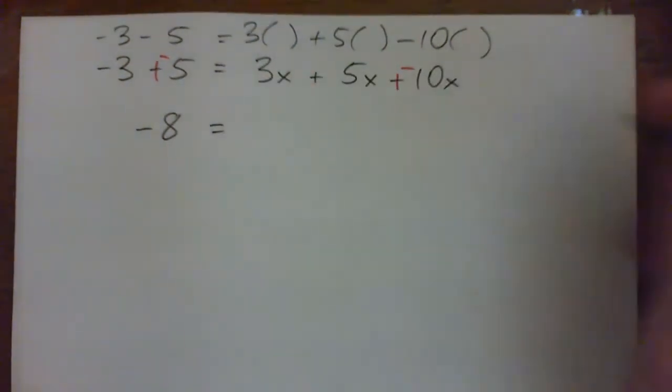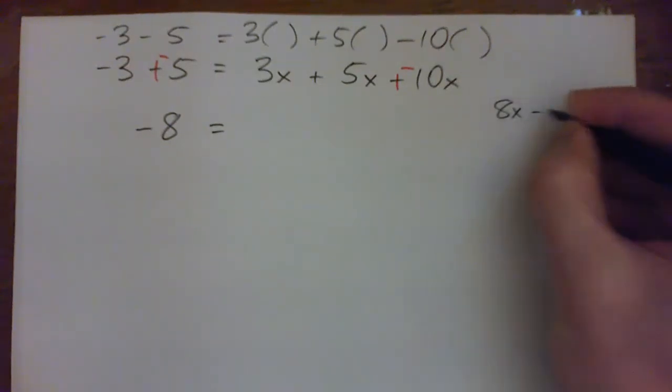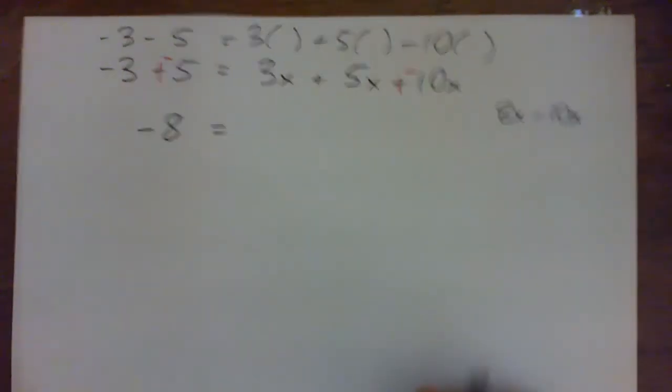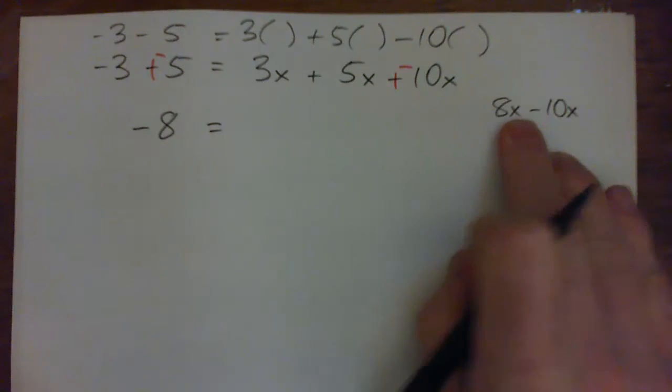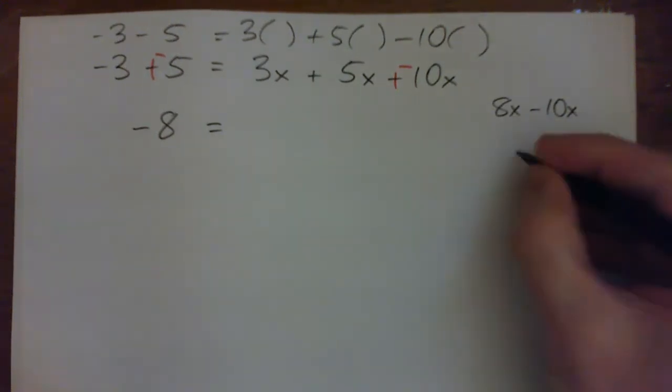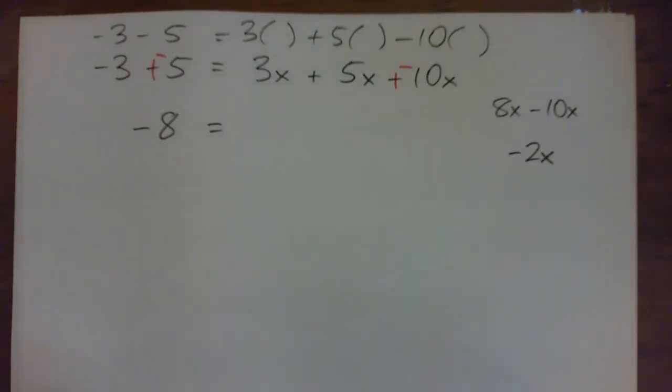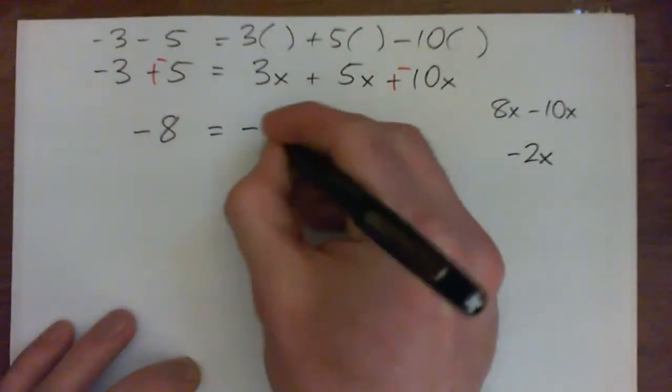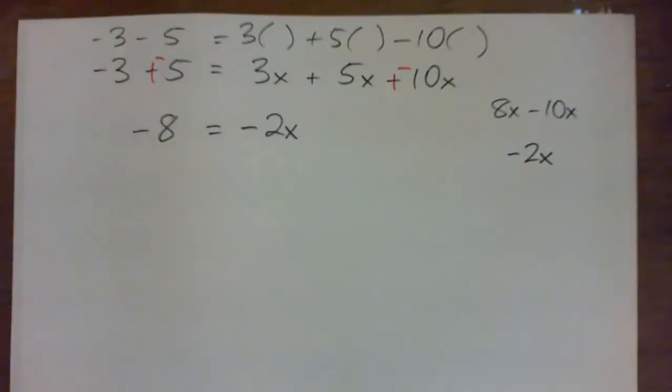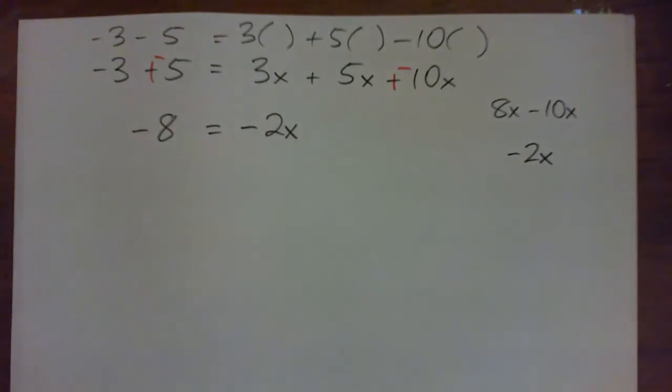If you want, you can go from left to right and figure out that that's 8x minus 10x. Or you can think, I've got $8, I spend $10, now I'm in debt by $2. But whichever way, on the right, you should end up with a negative 2x. So there's a couple of ways of dealing with adding or subtracting negatives.